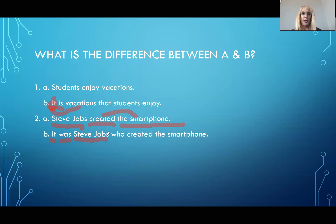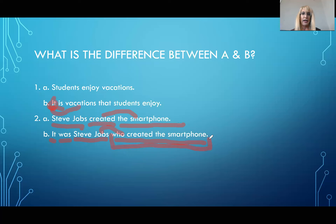We still focus on Steve Jobs and what he did. Who created the smartphone? What kind of structure is this — 'who created the smartphone'? This is an adjective clause, right? It's describing Steve Jobs. So inside our adjective clause, we have a subject and a verb. Remember, in order to be a clause, we need a subject and a verb. The verb inside the adjective clause is 'created.' The subject is 'who,' and what did he create? The smartphone. So we do have a subject, a verb, and an object because it's a transitive verb. This whole structure is an adjective clause describing the proper noun Steve Jobs. But it's still an active sentence.